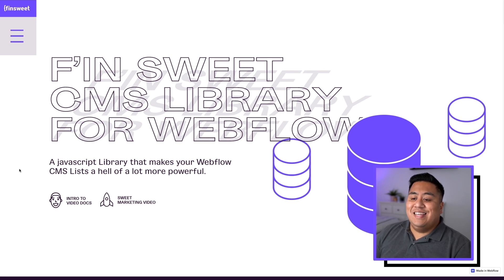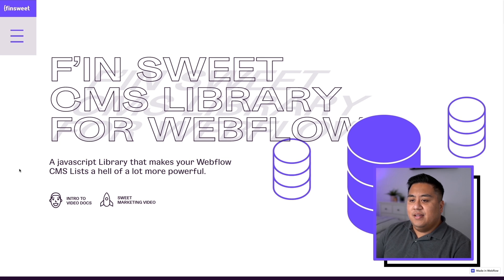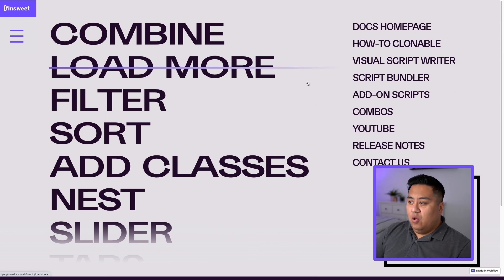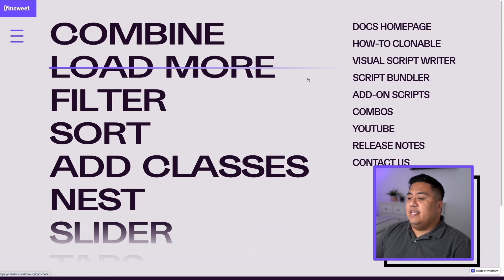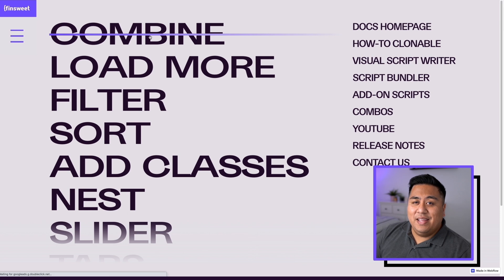There are different tools here. This is a JavaScript library that you can implement on your CMSs to make it even more powerful. We're going to go to the website — there is a great description of all the different tools, complete with a page for each one, a clonable, a visual script writer, and YouTube videos as well. We're going to go over the clonable individual script writer later on, but we're going to start with the first tool, which is the Combine tool.